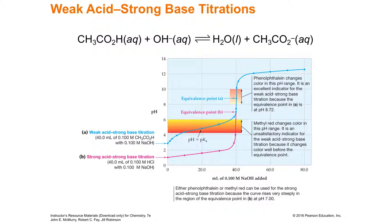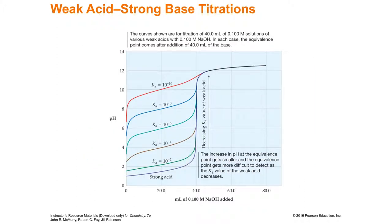If you have a strong base with a weak acid, you're not going to get such a pronounced curve. Most of the acid stays as a molecule — it doesn't break apart into H's — so you get a wimpy curve; it's not as nice and steep as with a strong acid. If you were to see a printout curve, you could almost tell whether it was a strong acid, giving you a nice steep curve, or a weak acid, giving a wimpy curve. The weaker the acid, the wimpier the curve; the stronger the acid, the more pronounced the curve.